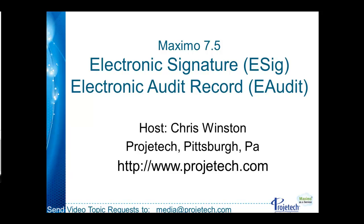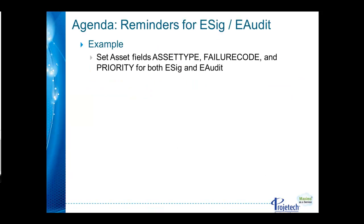As a reminder, if you have any specific topics you wish covered, please send an email to media at projecttech.com. To better depict the functionality and in the interest of time, we'll be using an example that has already been configured in our demo instance. Our example has both the eSIG and eAudit features turned on for the asset object, specifically the fields asset type, failure code, and priority.